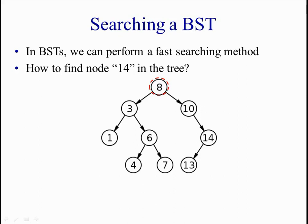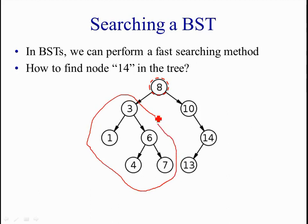We have to continue searching the tree, but there is a decision to be made first because the tree has two subtrees — left and right. Which one are we going to continue searching in — the left one, the right one, or both? Because the value 14 is bigger than 8 at the root, we know that according to the properties of a BST, if node 14 is to be found, it must be in the right subtree of the root, not the left one. This gives us an advantage of skipping all the nodes in the left subtree, which improves search performance.